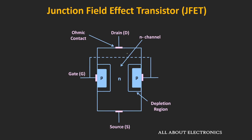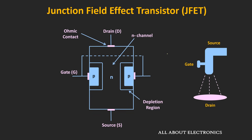Whenever we apply a voltage between the drain and the source terminal, current starts flowing through the device. And by applying the voltage between the gate and the source terminal, this current can be controlled. The working of this JFET can be explained using the tap water analogy — just as water flows from source to drain and the flow is controlled by a knob, the gate-to-source voltage controls the current flowing between the drain and source terminals. Now let's see the exact polarity of voltages required for the N-channel JFET.